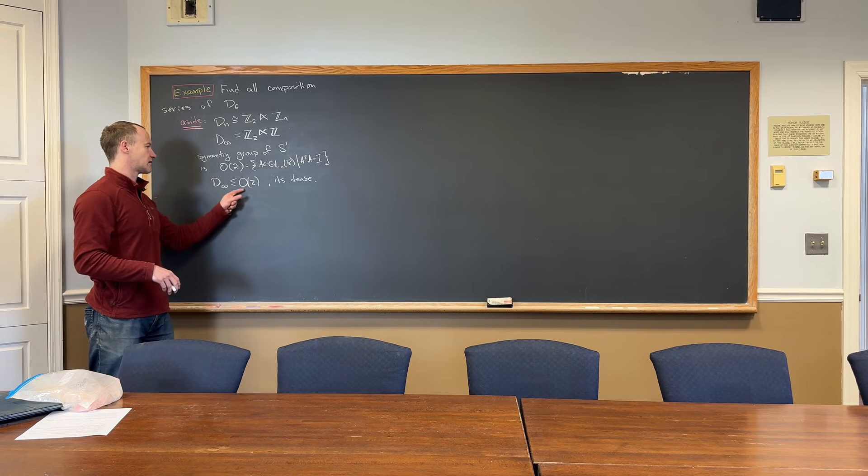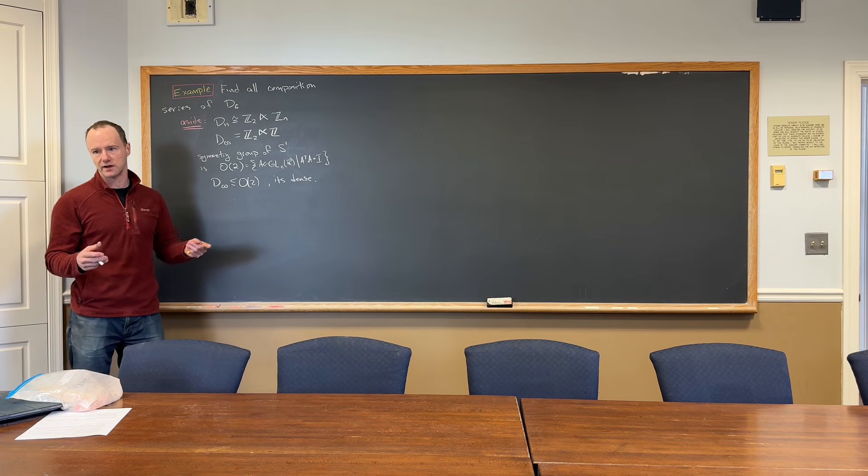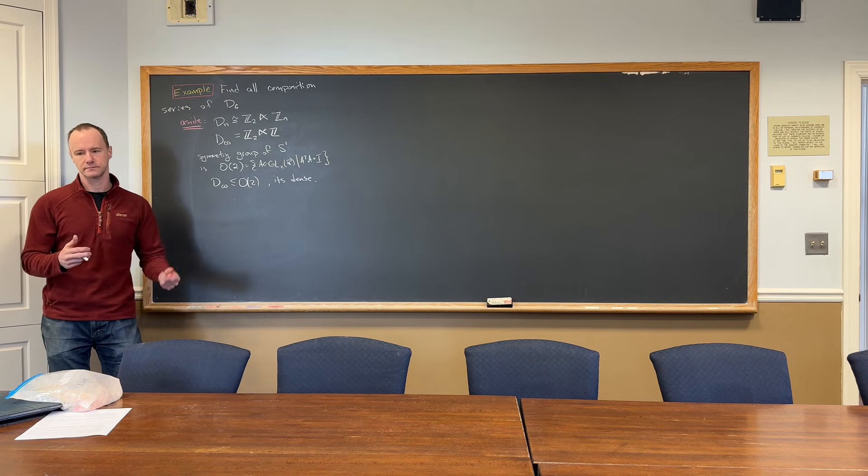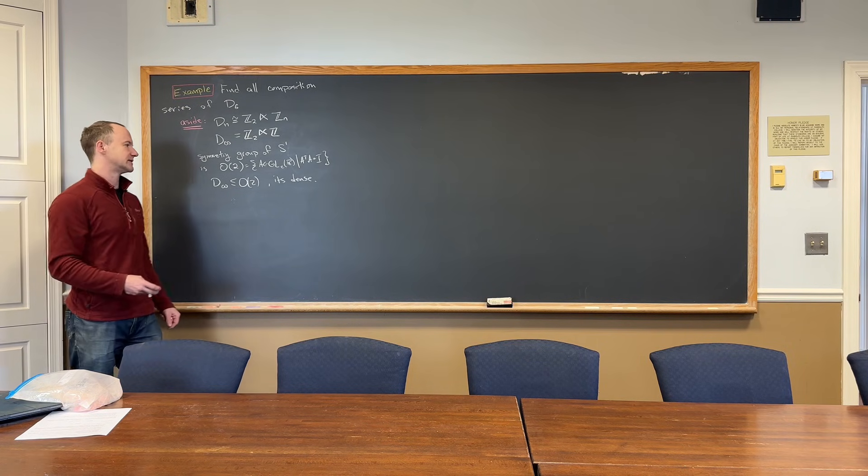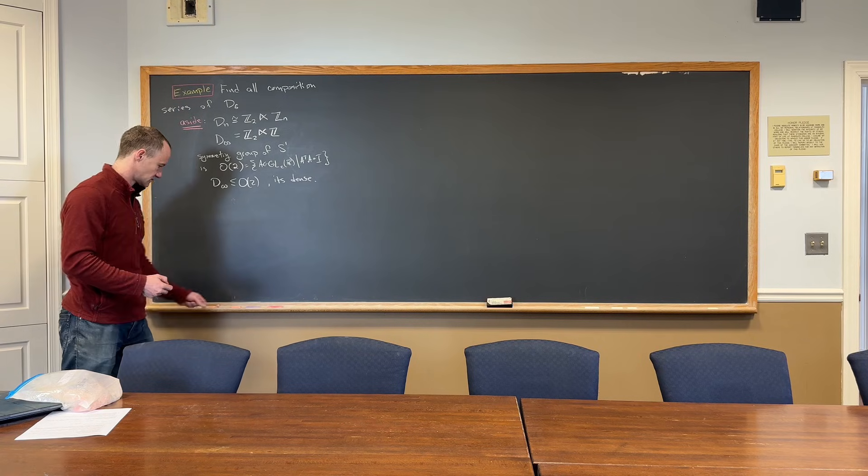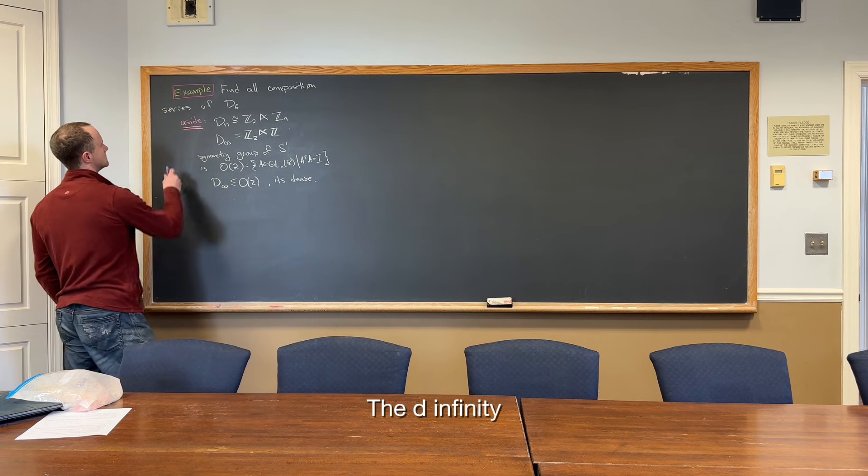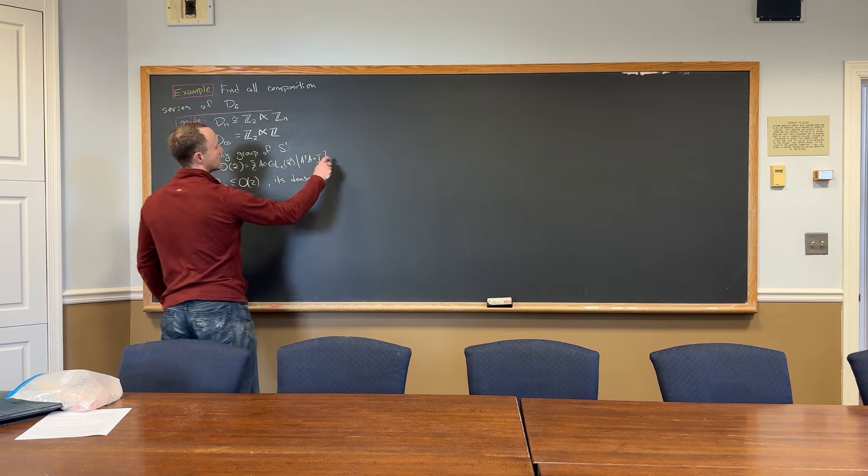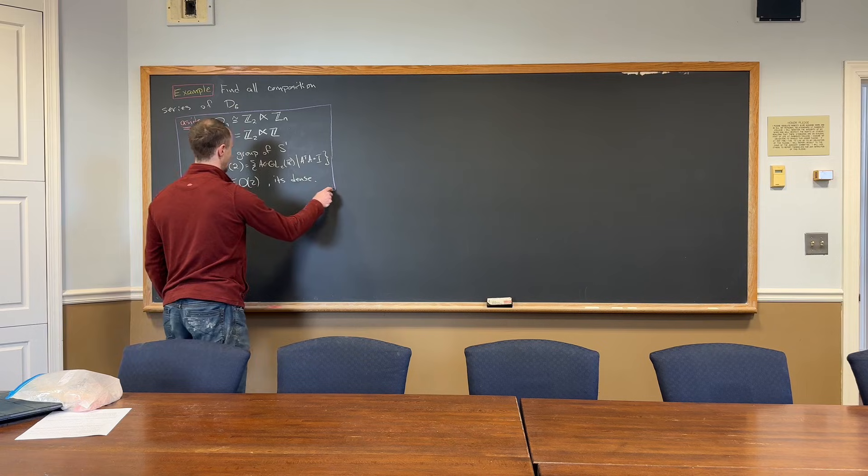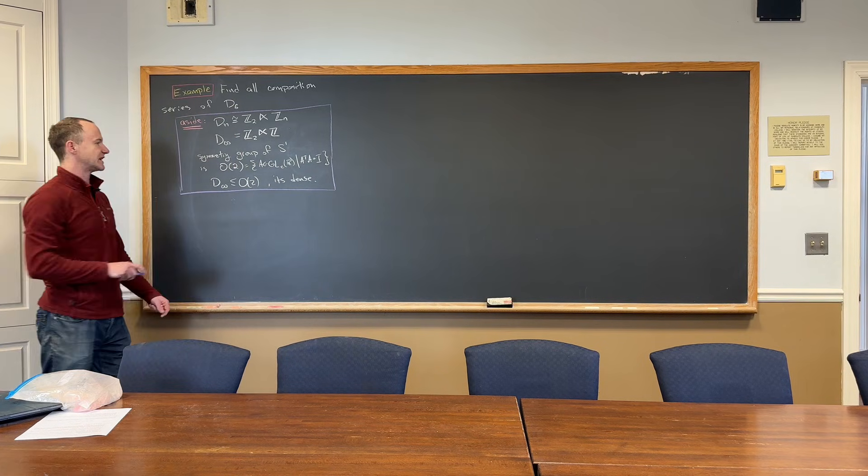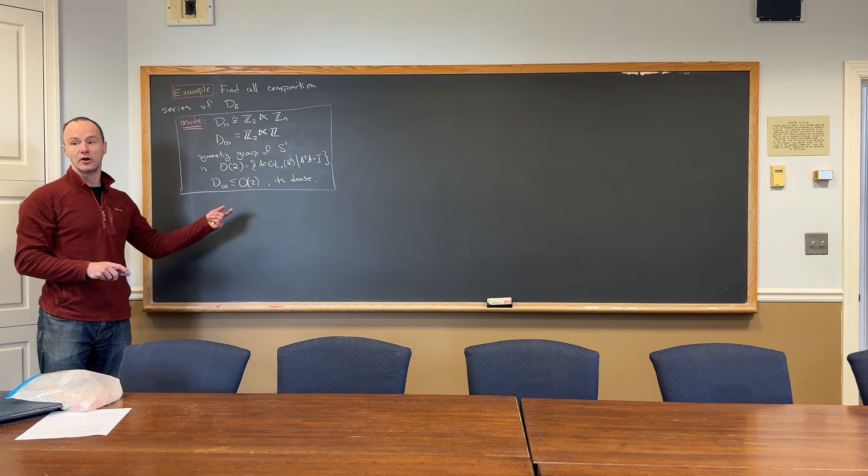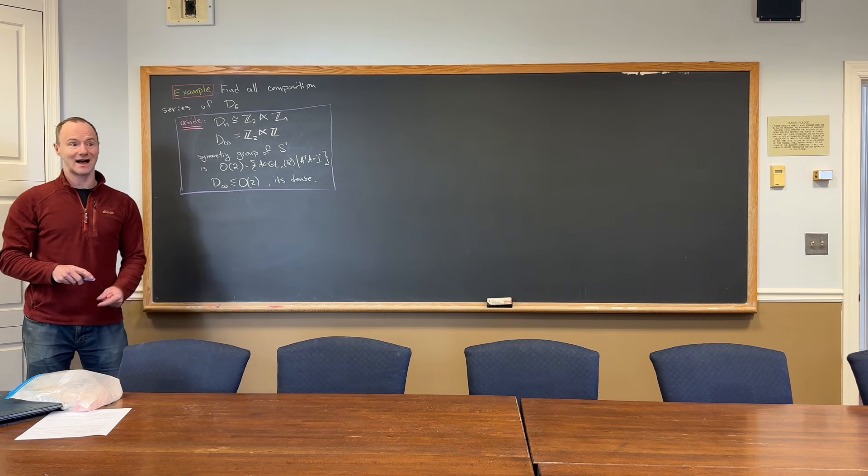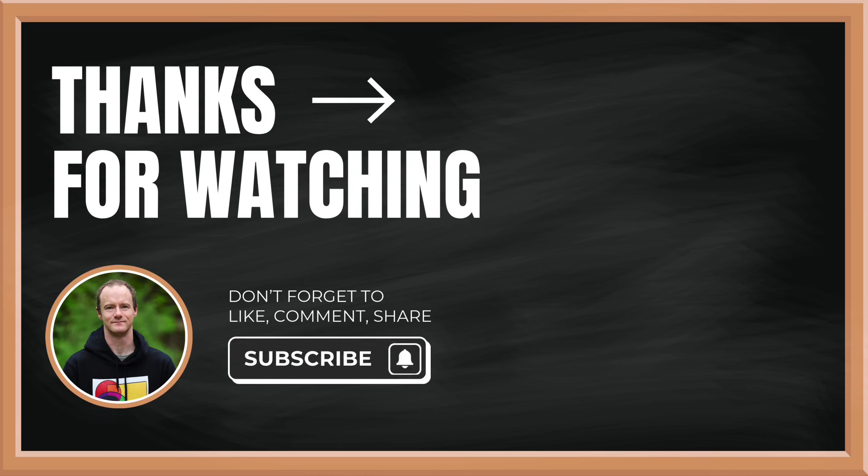But anyway, D-infinity, if you think about O2 like the real numbers, which it's not, but if you think of it like the real numbers, D-infinity would be like the rational numbers. It's that kind of density. So you're saying D-infinity, I was like D-infinity is a circle. You're showing me that it's not a circle, it's a subgroup of the circle. Yeah. I mean, it's essentially everything because it's dense. What we're missing is that it's dense in the circle group, it's not the whole circle.